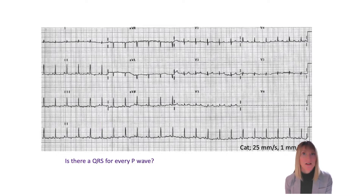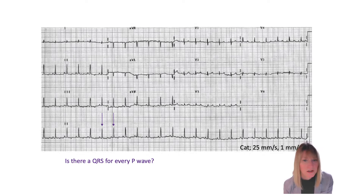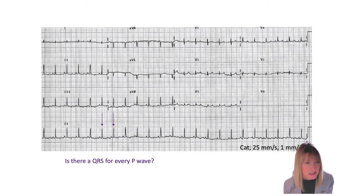My next question is, conversely, is there a QRS for every P wave? So now I'm focused on the QRS complexes — I've identified them there. As I scan left to right across my ECG, I'm really focusing on lead two here, though we could be looking in any lead for the purpose of this exercise. Is there a QRS for every P? Yes, indeed there is.